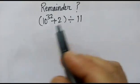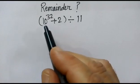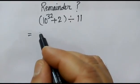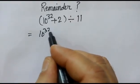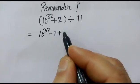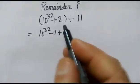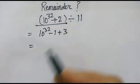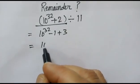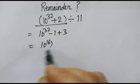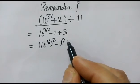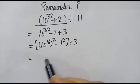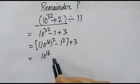Hi friend, in this problem we have to find out the remainder of 10 to the power 32 plus 2, divided by 11. Now we transform this as 10 to the power 32 minus 1 plus 3. In the next step, we write 10 to the power 16 squared minus 1 squared plus 3.